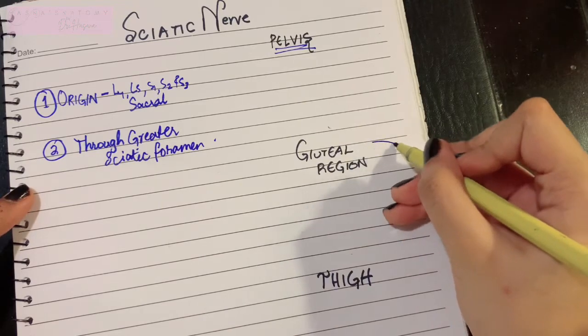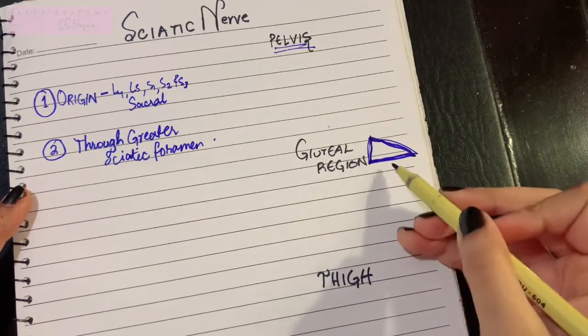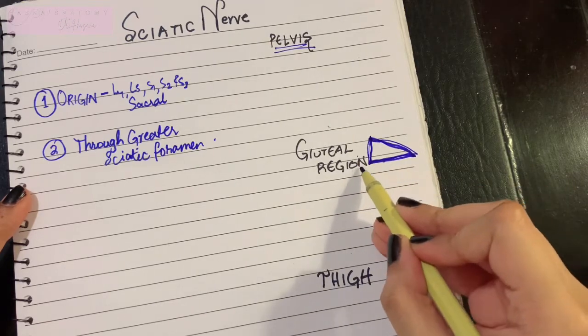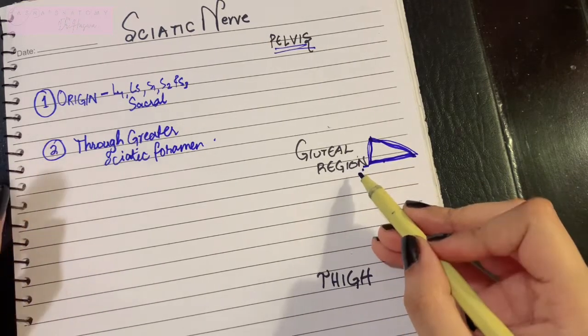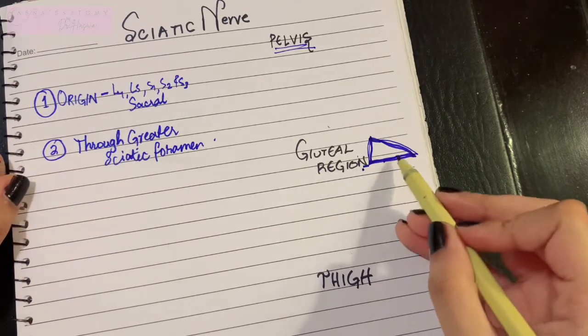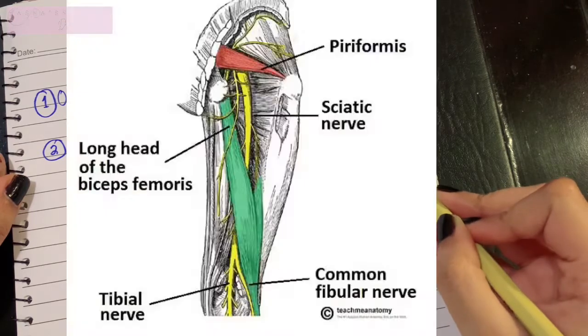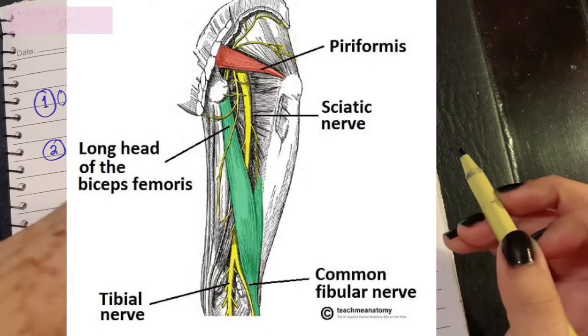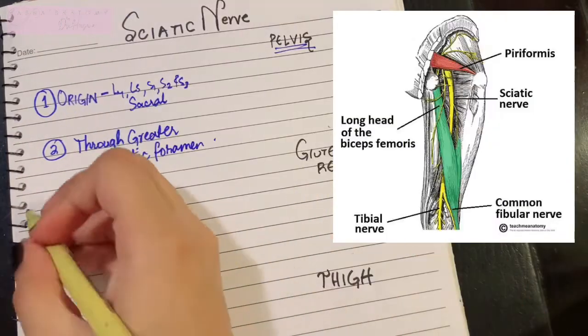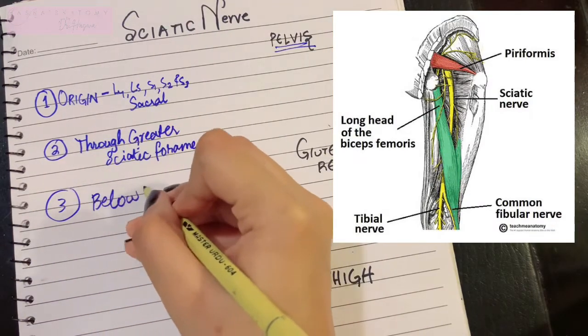In the gluteal region, there is a muscle called piriformis. The piriformis is lying there, and just deep to the piriformis, your sciatic nerve is basically passing through the greater sciatic foramen. Once it reaches close to the piriformis, it goes below the piriformis and enters the gluteal region. Point number three: it passes below piriformis muscle.